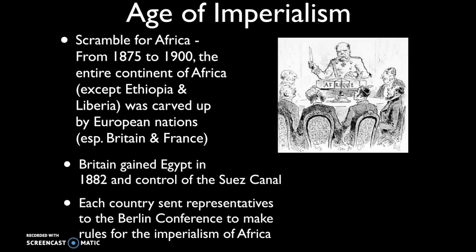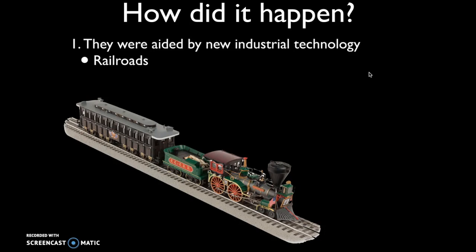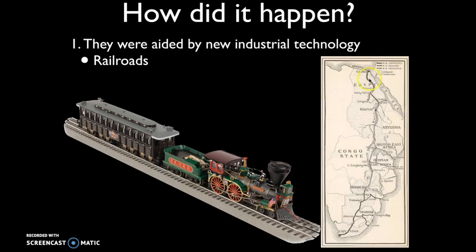Europeans had a couple of distinct technological advantages, which is one reason why they were able to so quickly carve up Africa. First, they could make inroads into Africa with new transportation technologies — steel, railroads — which they built into the interior of Africa, allowing them to transport men and supplies. Here you can see a map showing the attempt by the British to build a transcontinental railroad from Cape Town all the way up to Cairo. Ultimately, the plan was foiled by the Germans in East Africa and the Belgians in the Congo.